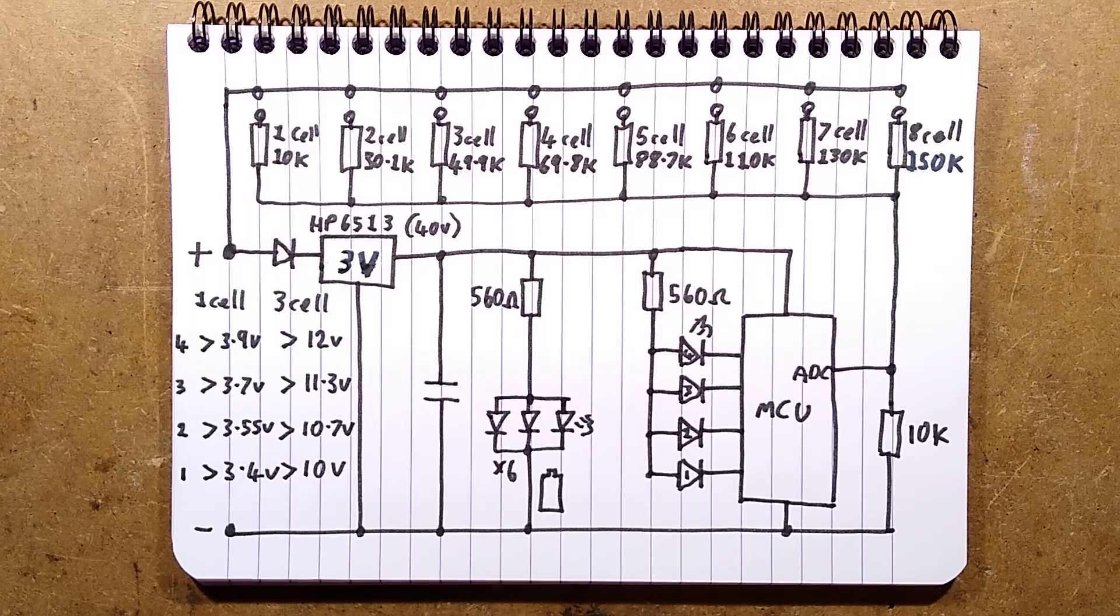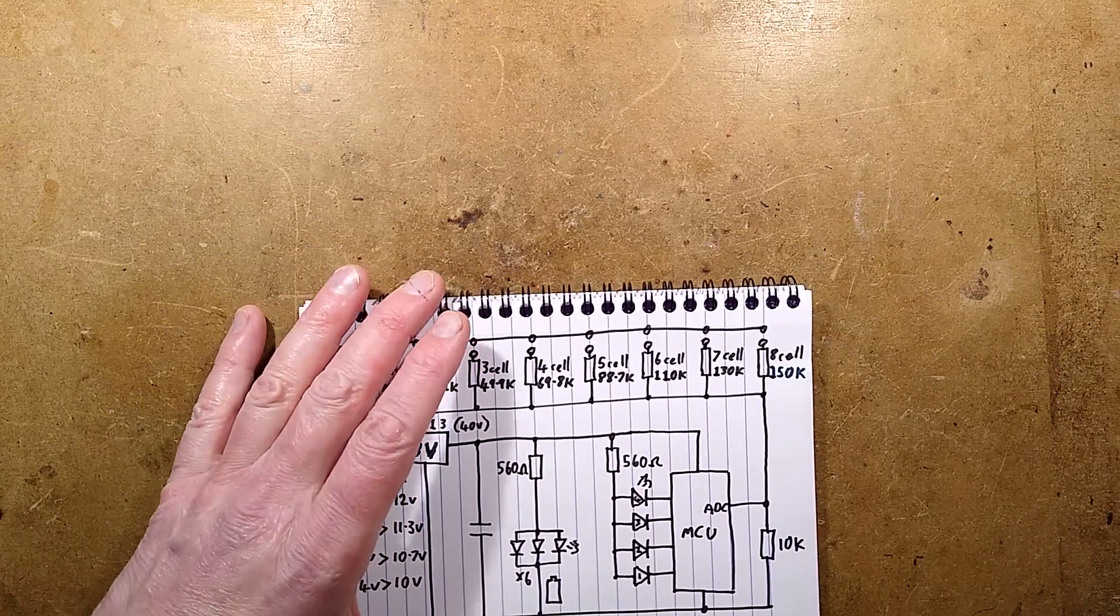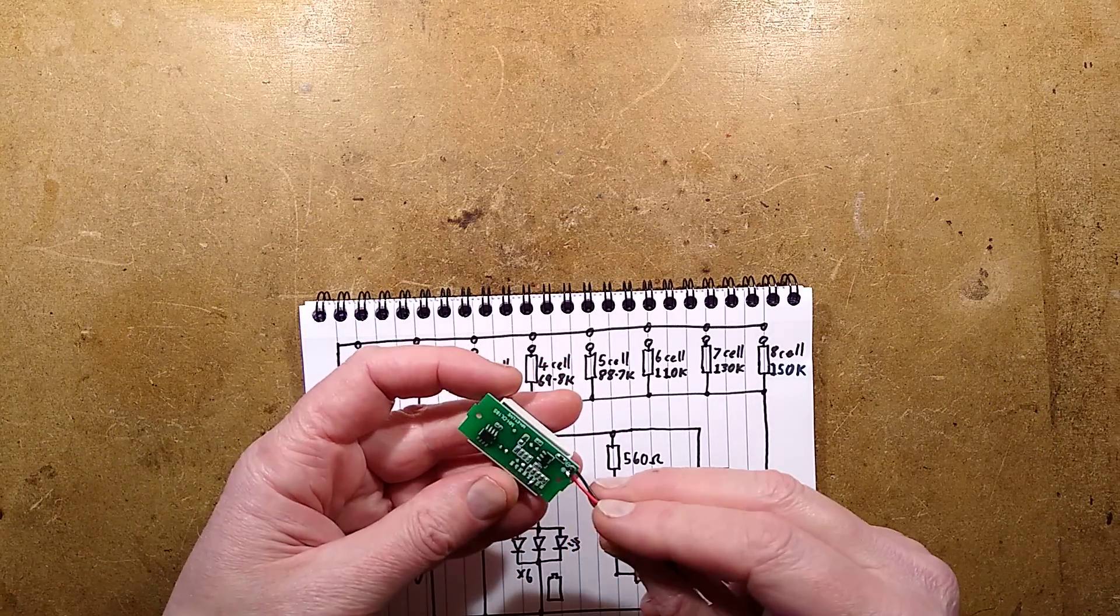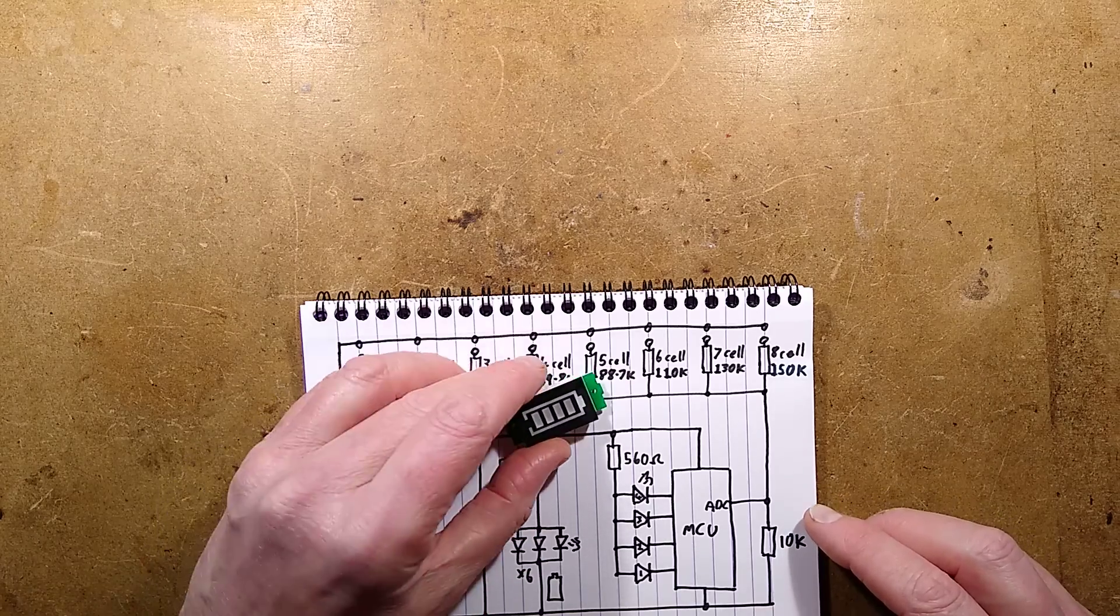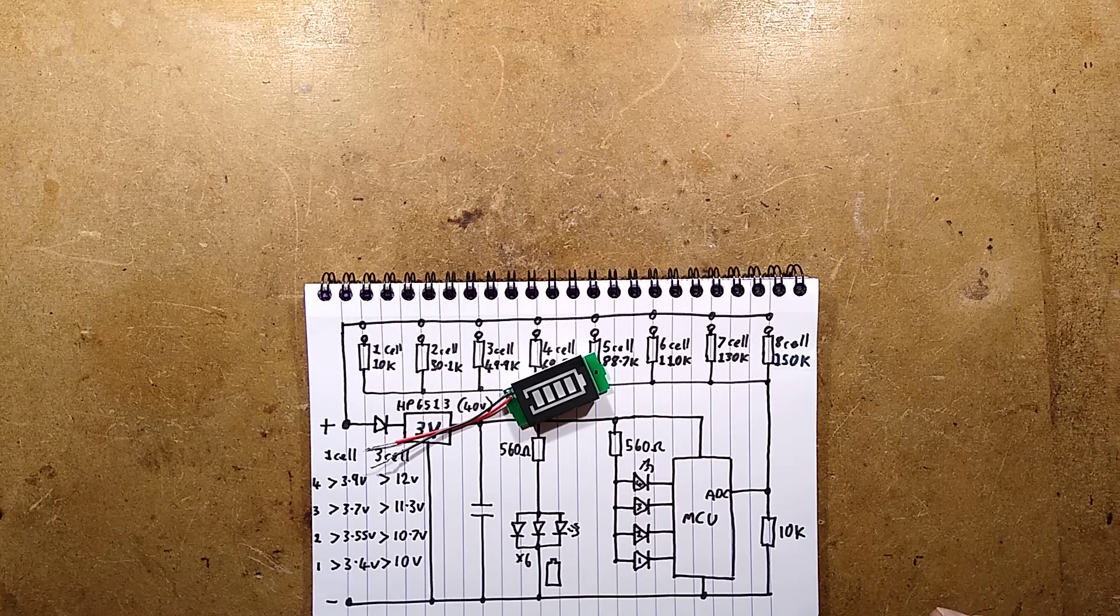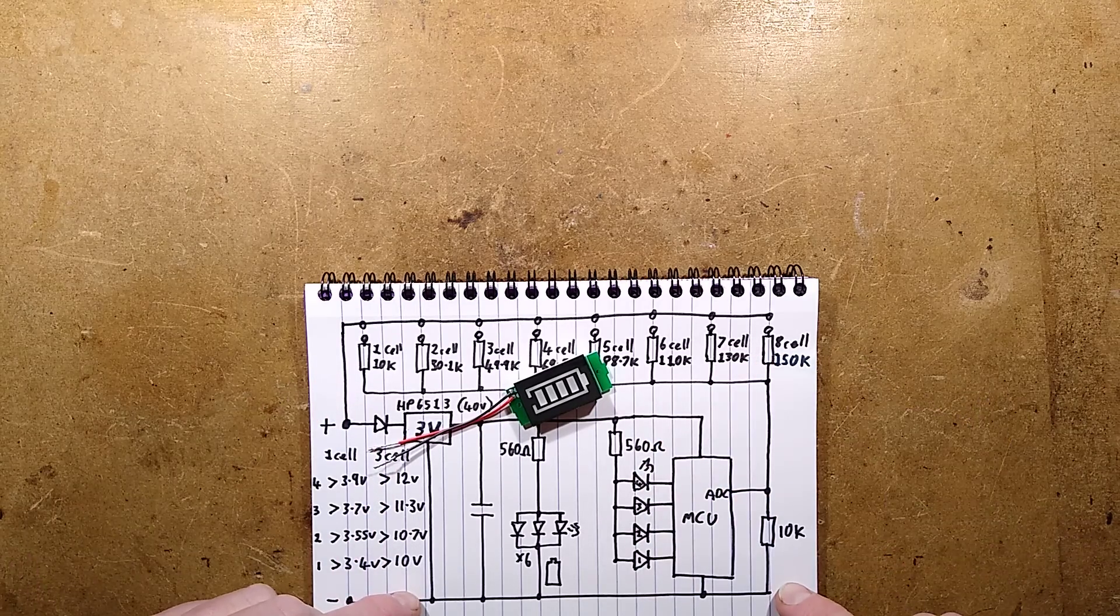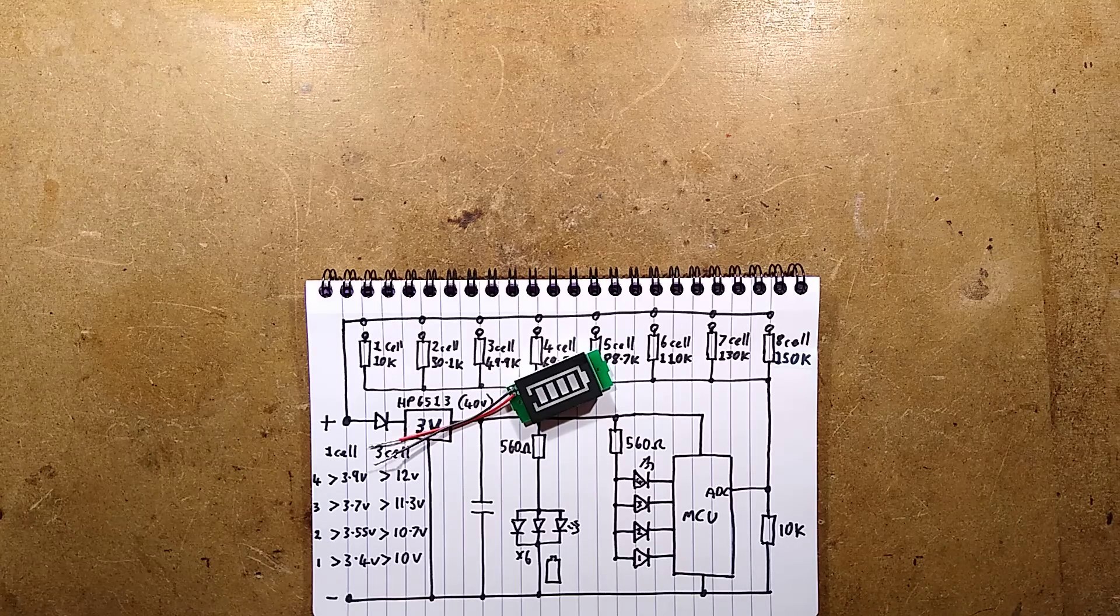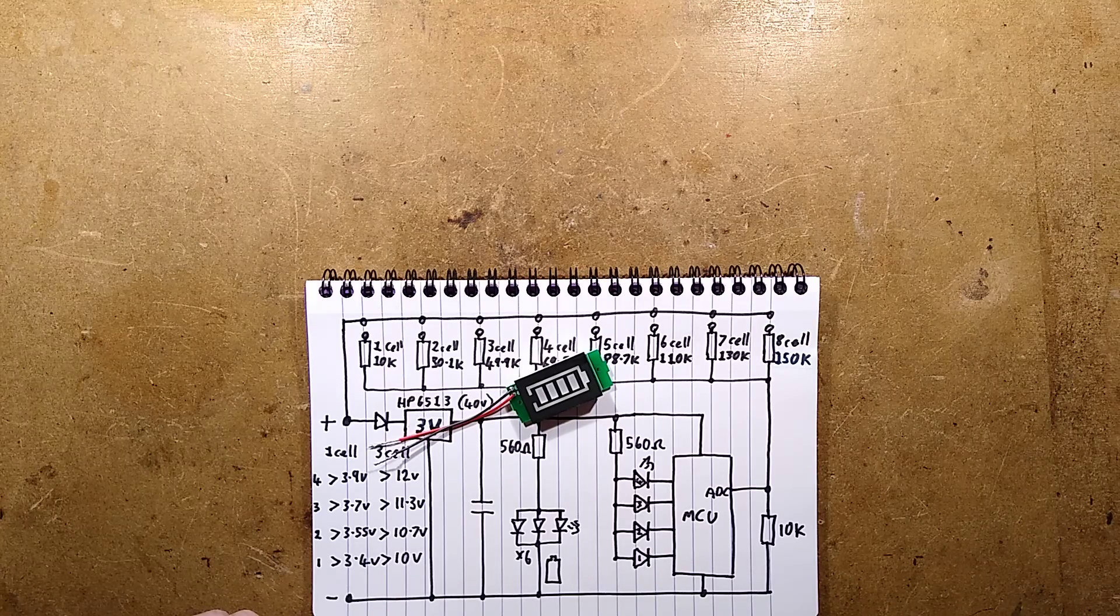But that is it, very clever, very neat little unit. Quite a smart layout as well, very easy to reverse engineer thanks to the fact it was all done by the microcontroller. But that's it, the more sophisticated, the more versatile battery level indicator for lithium cells of up to eight cells.